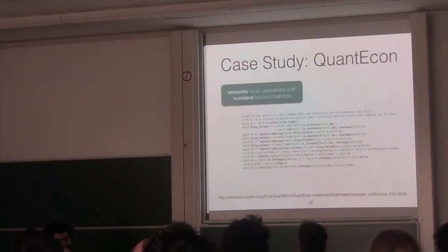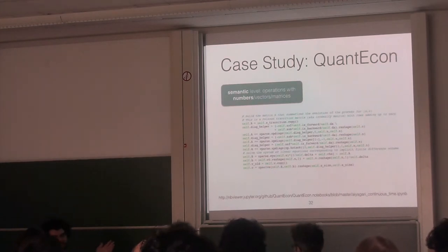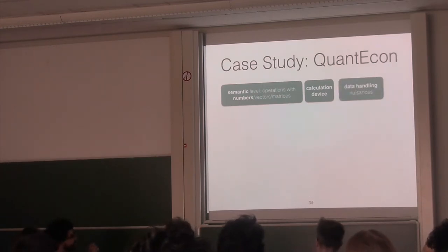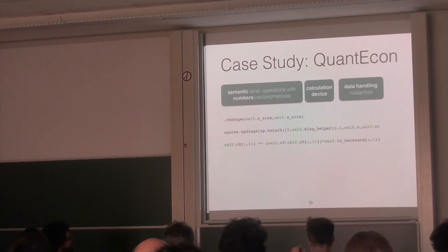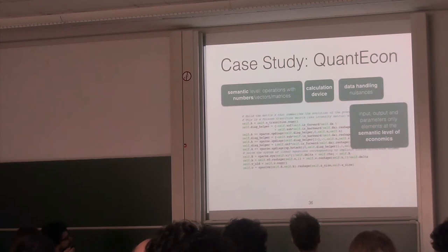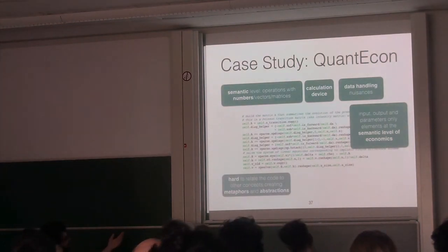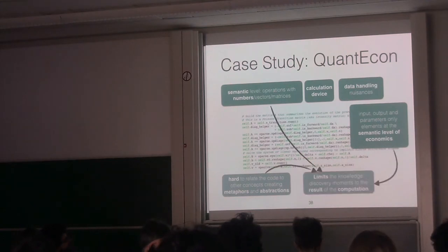You have the code in the same document. They create lecture notes with the code. The formatting is at the right level. But if you look at the actual code, what we see is that the semantic level are just operations with numbers, vectors, matrices. This is a very calculation device use. Also, you have data-handling nuisances, for instance, reshape, indexing, slicing. It's very hard to relate this with some other thing to create a metaphor and abstraction.